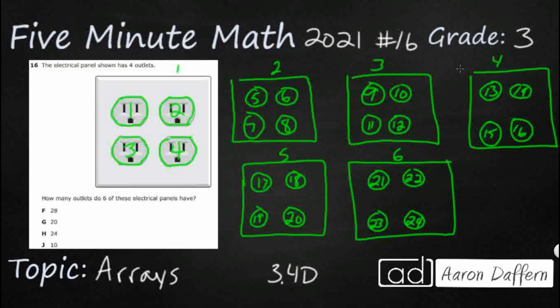Now, how could we have solved this without necessarily drawing all of these? Well, there are a few different ways. Some of you immediately went to a multiplication sense, which would have been great. If you would have said six panels times four outlets per panel, that would have given you that same 24.